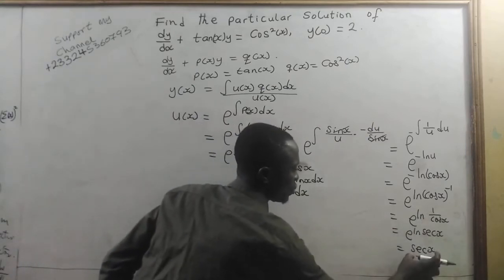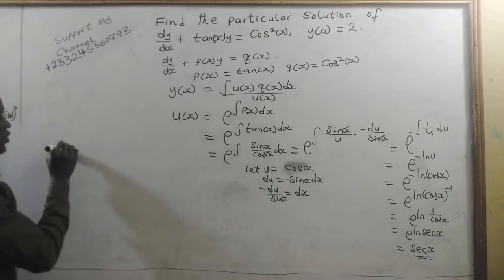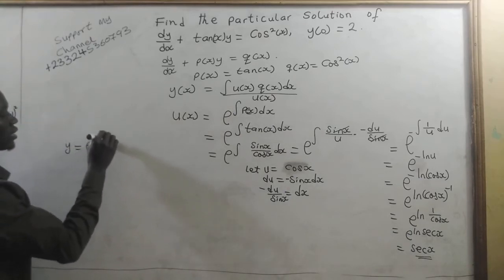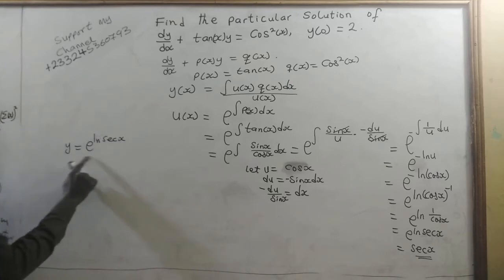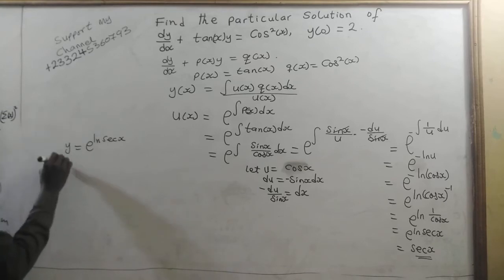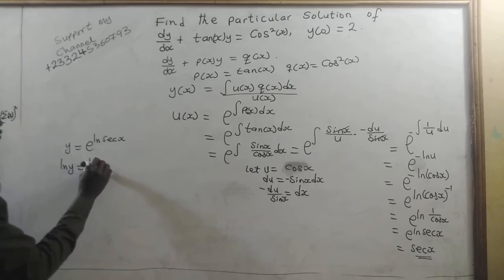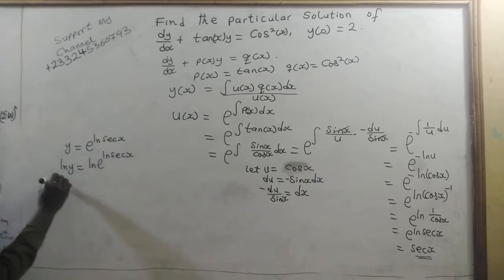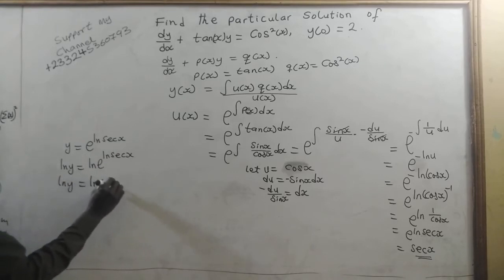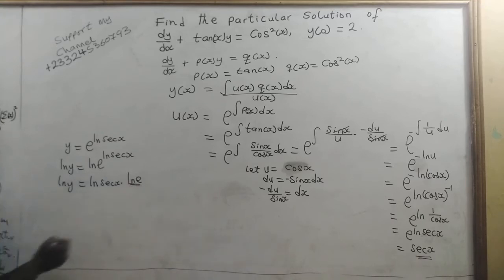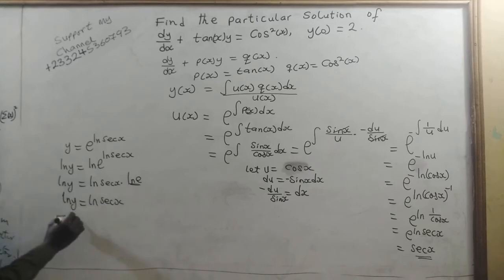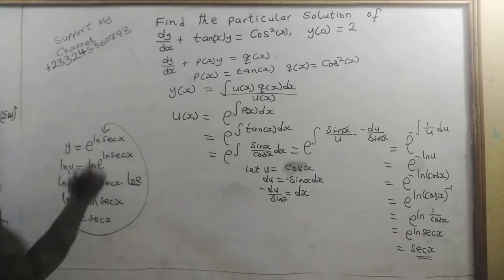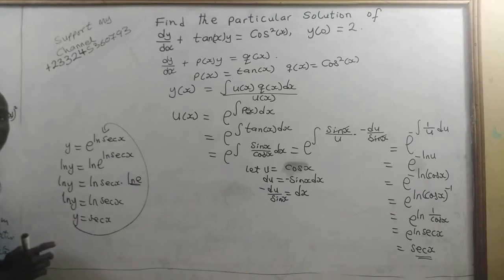Now if we want to understand why this is equal to secant of x, let me explain quickly. If we say y equals e to the power of natural log of secant(x), and we take natural log of both sides, we have natural log of y equals natural log of secant(x) times natural log of e. Natural log of e is 1, so natural log of y equals natural log of secant(x). Taking anti-log, we have y equals secant(x). That's why the integrating factor is secant(x).